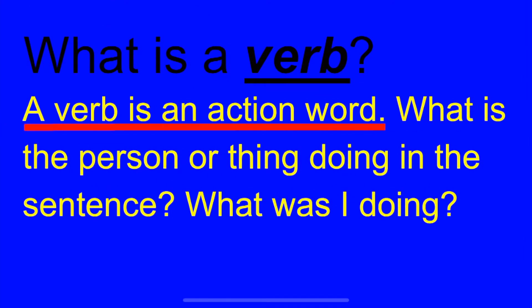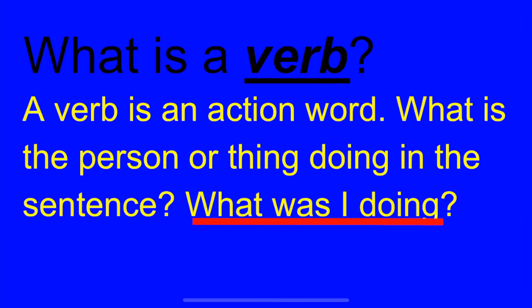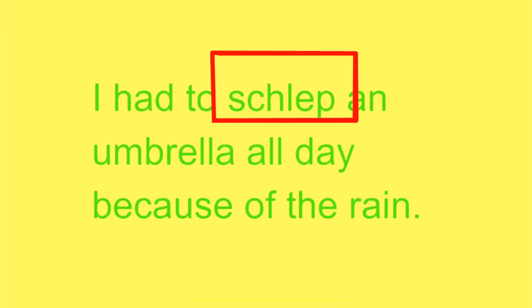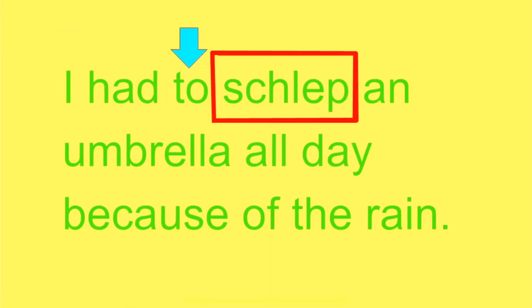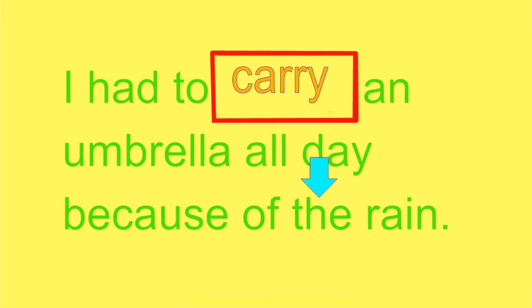What is a verb? A verb is an action word. What is the person or thing doing in the sentence? What was I doing? Schlep means to carry something. I had to carry an umbrella all day because of the rain.